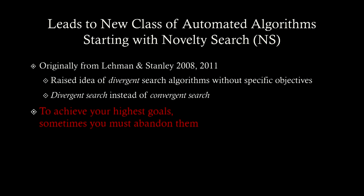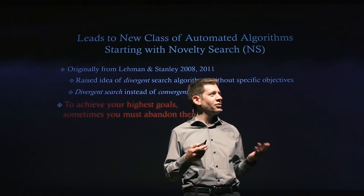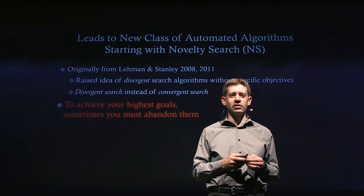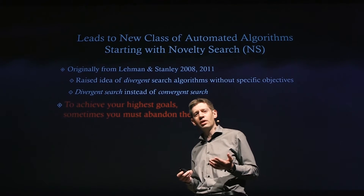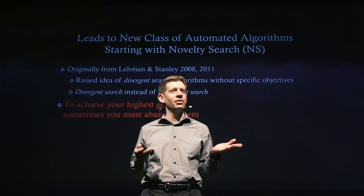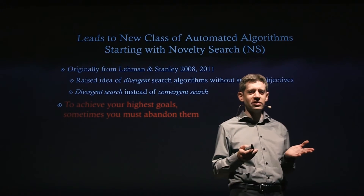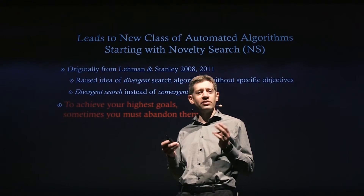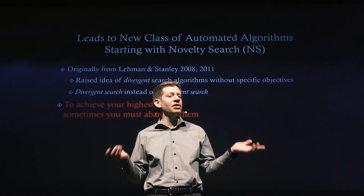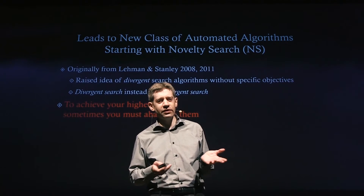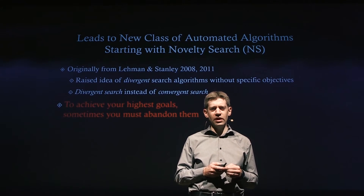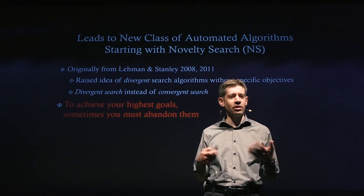My colleagues and I — in particular Joe Lehman, who was at the time a PhD student in my group — tried to formalize this notion into an algorithm that could run on its own. That came to be known as novelty search, which is now pretty well known within artificial life. The novelty search algorithm is a radical idea because it doesn't try to optimize anything. It is a learning algorithm that only tries to discover things that are different from what it's seen before. It's purely divergent and has no specific objective.